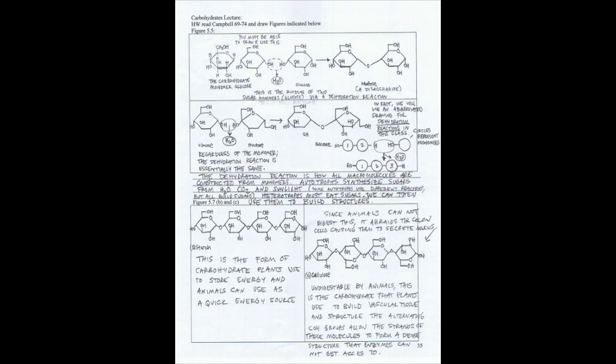Starch is the form of carbohydrate plants use to store energy, and it's one that animals use as a quick energy source. While cellulose, in the second box, is undigestible by animals, it abrades our colon walls, causing the cells of our colon to secrete mucus and allowing us to defecate.